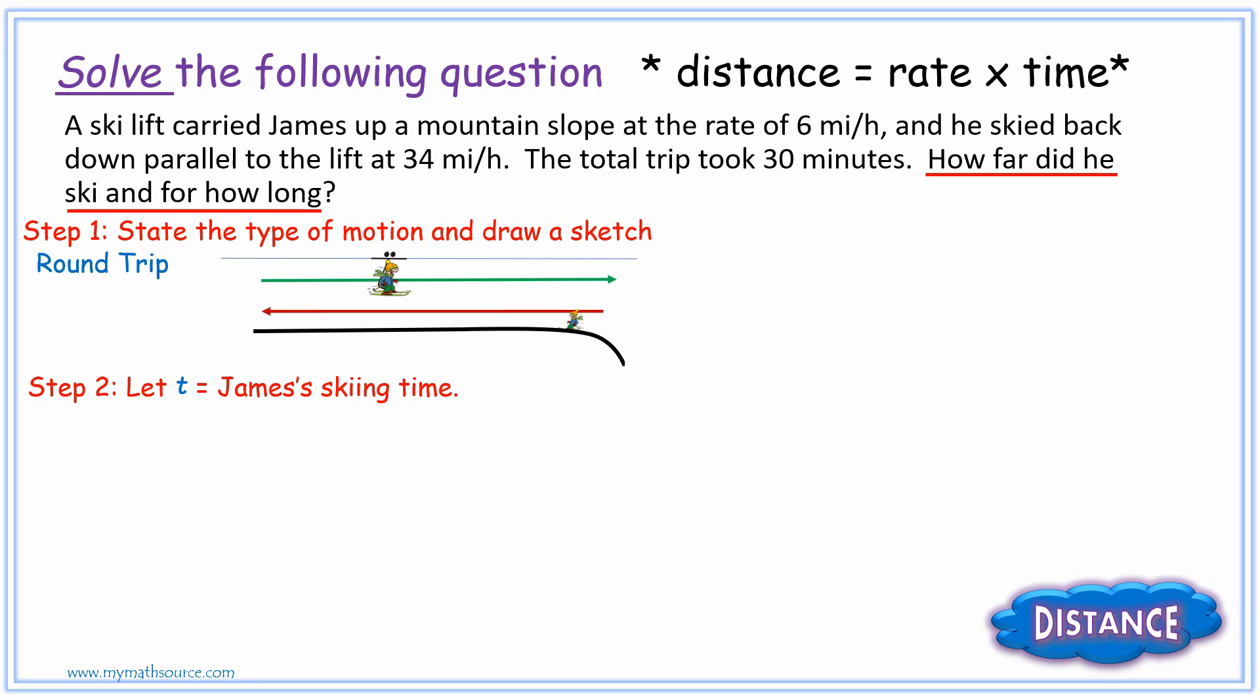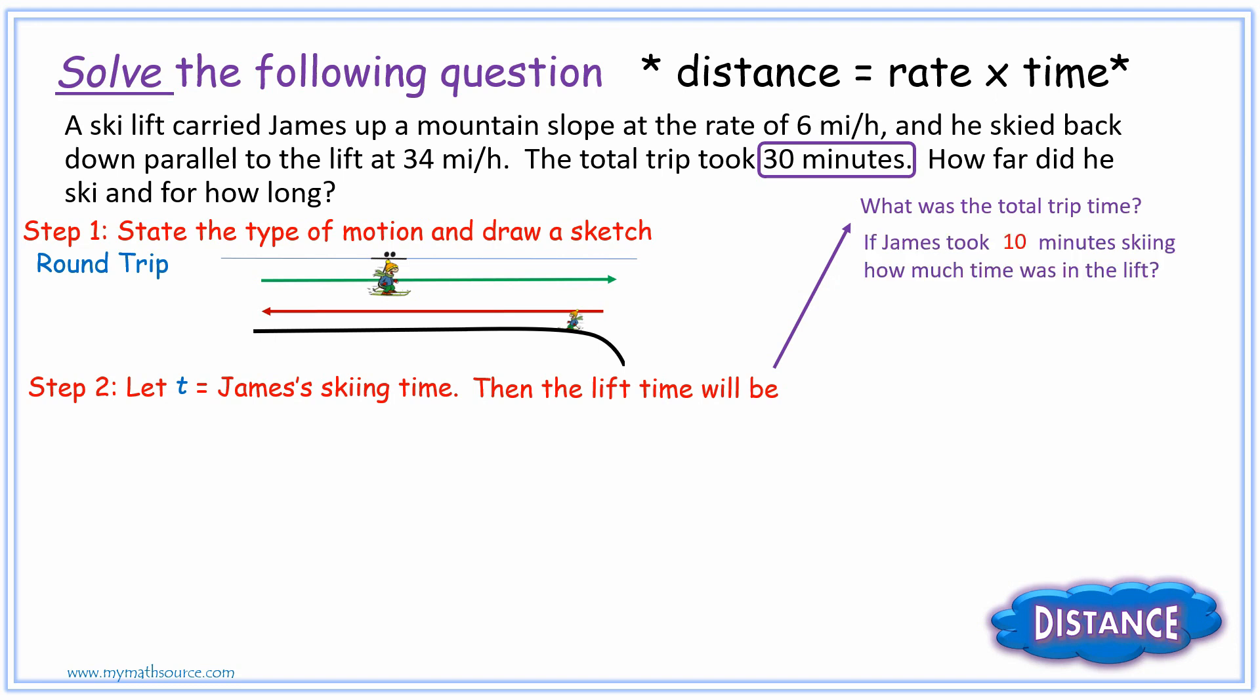That allows us to choose which motion up or down that we're going to have as our main variable. And that's going to be T, T for time, because T is going to represent his skiing time. The lift time that we need to find is going to be related. They did not give that either, as you notice in the question. So one way that we can find out what his time is in terms of the lift is to think about what is the total trip time. The total trip time here was 30 minutes. So just to give an idea of how we can get a variable model for this, if James took 10 minutes skiing, how much time was he in the lift?